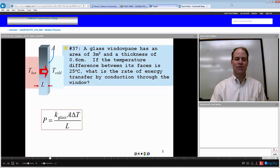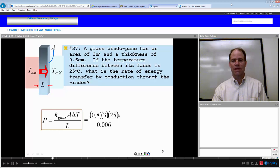It's K-A-T-L. The thermal conductivity of the glass times the area of the glass, change in temperature on both sides of this glass over its thickness L. The thermal conductivity of glass from the previous screen is 0.8. Area is 3 square meters. Our change in temperature is 25 degrees between the hot and the cold. And the thickness of this glass is 0.6 centimeters, which is 0.006 meters. Everything's in the SI system, so our answer is 10,000 joules per second or 10,000 watts.